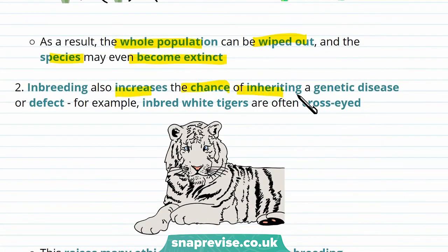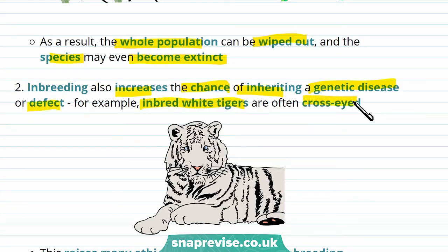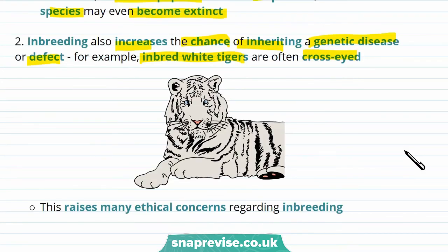Inbreeding also increases the chance of inheriting a genetic disease or defect. For example, inbred white tigers are often cross-eyed. There's also a huge problem with inbreeding in dogs — pugs, which have been bred to have squashed faces and short snouts, now have breathing problems. The chance of inheriting a genetic disease or defect through inbreeding raises many ethical concerns.